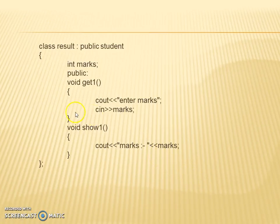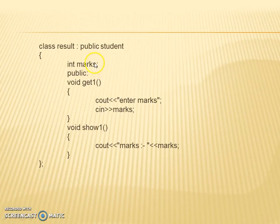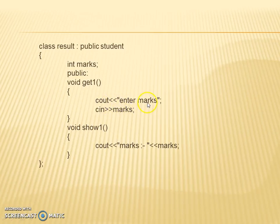The derived class is Result, and Student is the base class providing public as the visibility mode, so all member functions of the base class can be accessed in the derived class. In Result, we declare the data member marks as public, and in get one we prompt the user to enter marks using cout, then accept marks with cin.